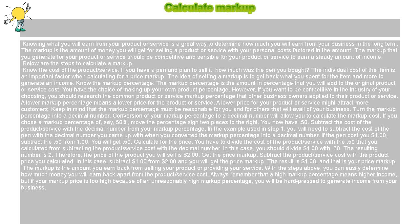Step 5: Calculate for the price. You have to divide the cost of the product or service with the 0.50 that you calculated from subtracting the product or service cost with the decimal number. In this case, you should divide $1.00 with 0.50. The resulting number is 2. Therefore, the price of the product you will sell is $2.00.